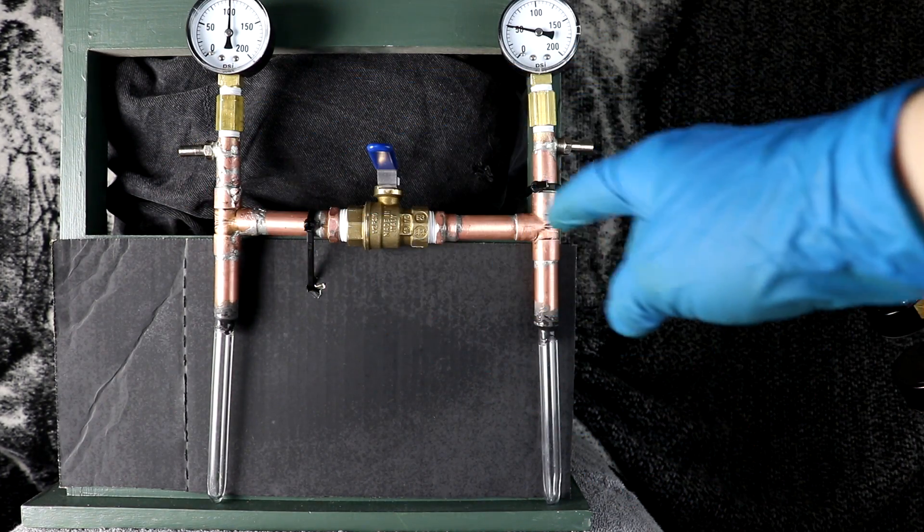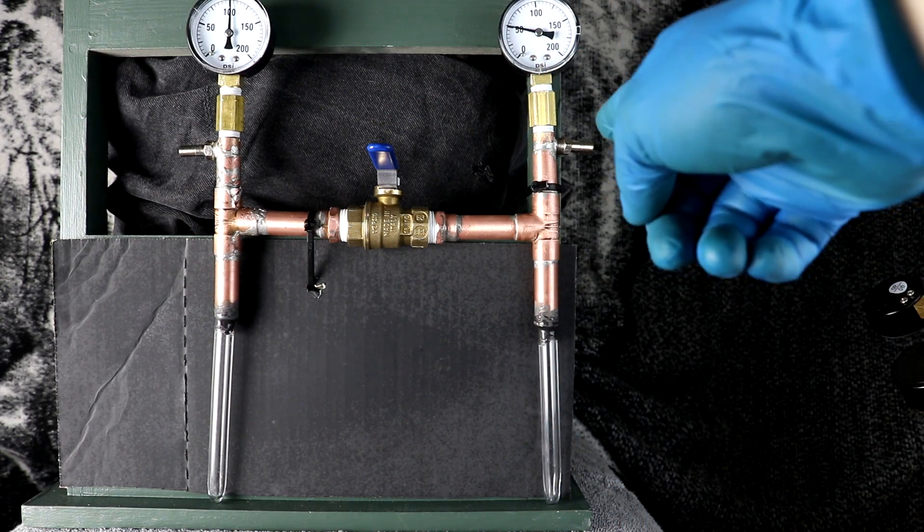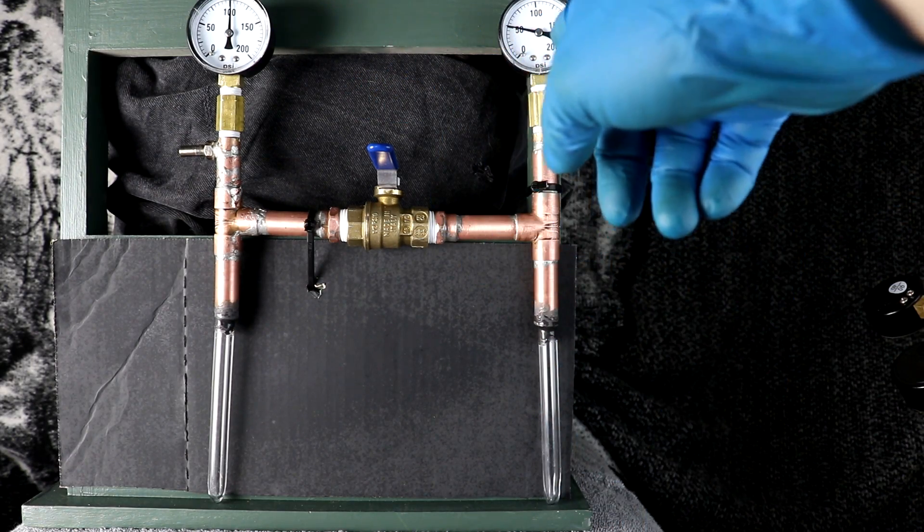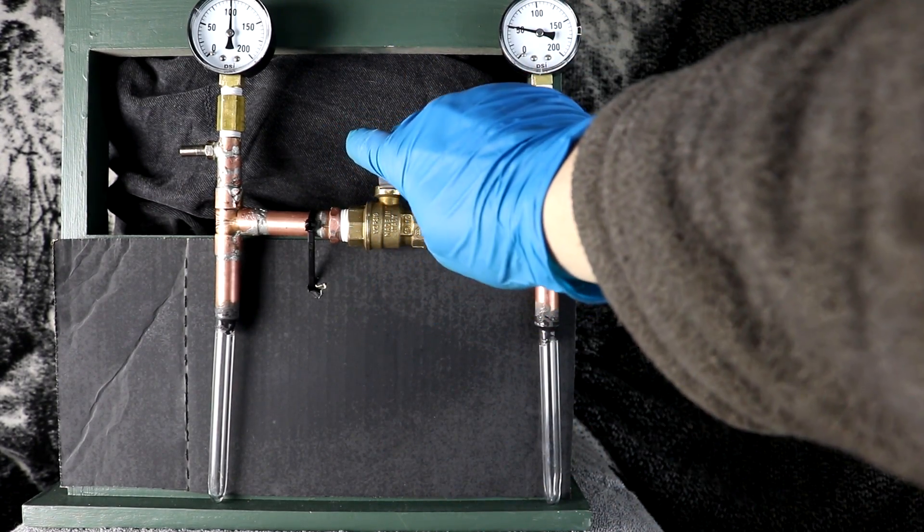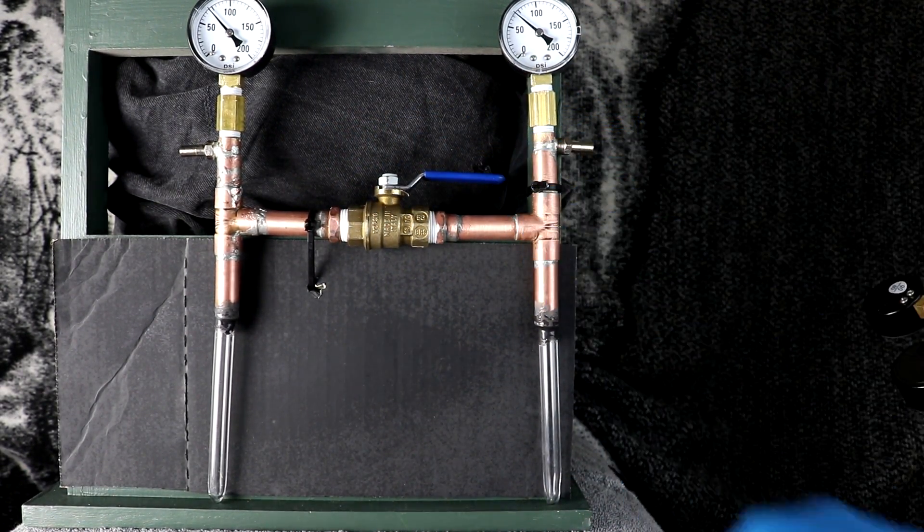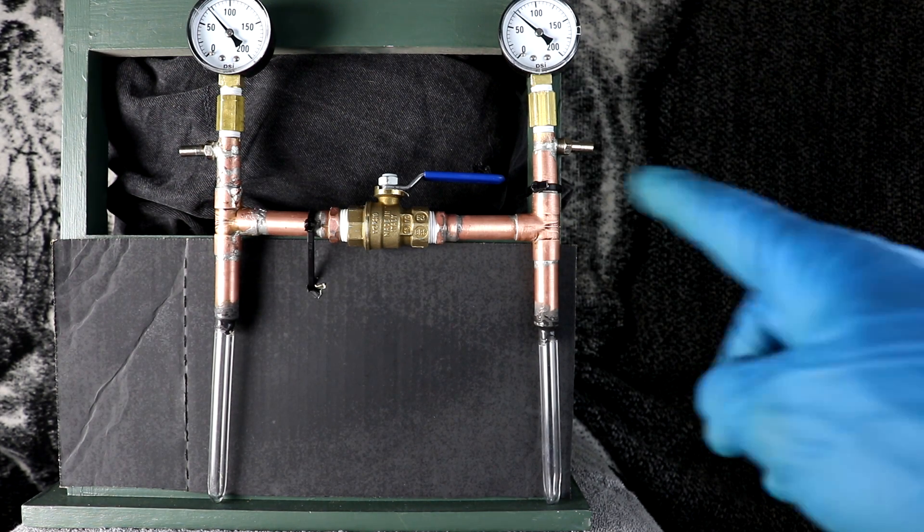So now if Dalton's law holds true and the gases don't react, which they shouldn't, the pressures will even out and form 75 pounds per square inch on each gauge. So here we go. Close enough, and indeed I should get this same result with a wide variety of gas combinations.